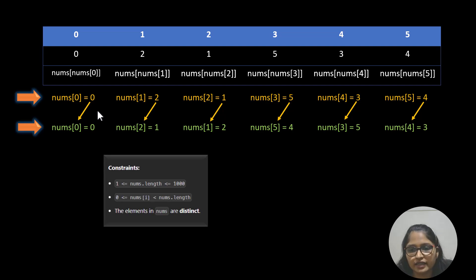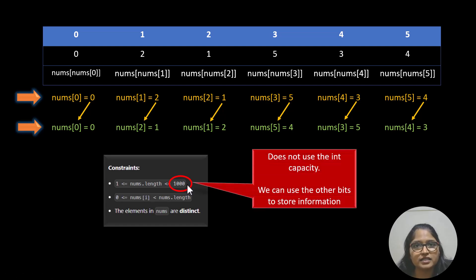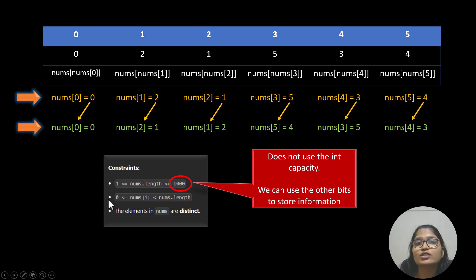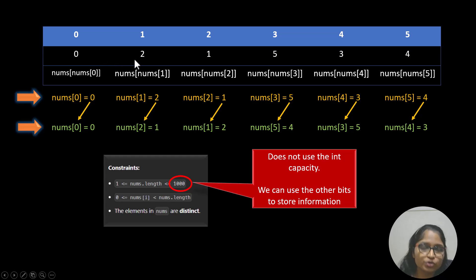Let's go through the constraints again. The nums.length constraint is from 1 to 1000, so we will focus on this: 1000 means we still have capacity to utilize the bits in the integer. If you write a binary representation for these integers, there will be some bits that are unused and will always remain unused because no number goes beyond 1000. If this were a string array it would have been very simple — we could append something like '0_2' and separate values by the underscore separator.